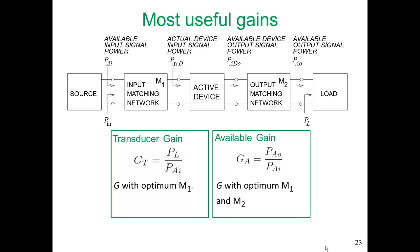Some other useful gain metrics: transducer gain is the gain with an optimum M1. The available gain is the gain obtainable with both optimum M1 and optimum M2. So even before we've designed the input and output matching networks, we can use the available gain. If we have optimum M1 and M2, this gain is solely determined by the active device's S-parameters.